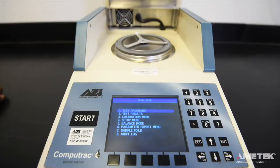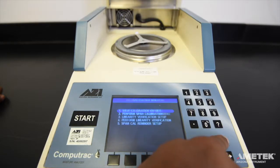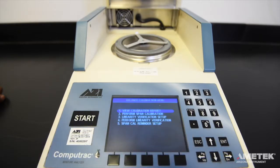From the home screen, press the menu button. Use the directional keypad to the right of the screen to highlight calibration menu and press enter to select it. You are now in the calibration menu. Select balance calibration to enter the balance calibration menu.